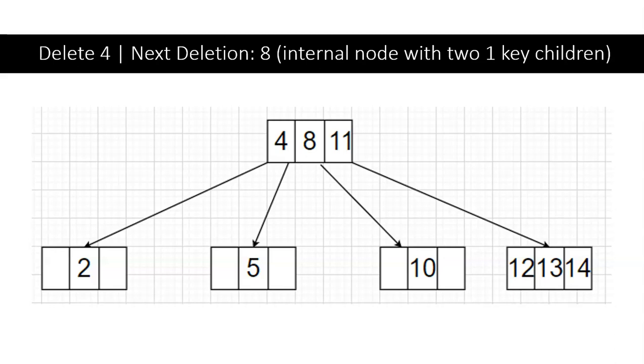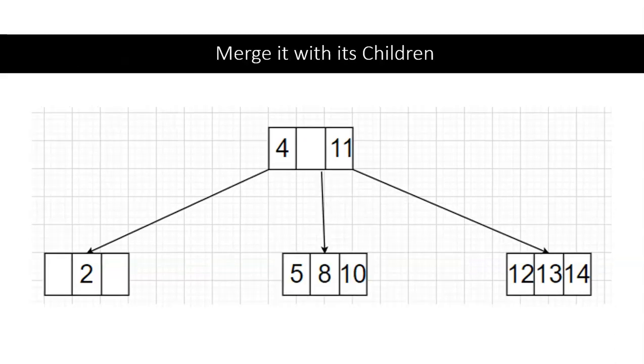Now we're going to be deleting 8. 8 is also an internal node and it has children that are single key nodes. Instead, we're going to be merging them together. Then we are allowed to delete 8.